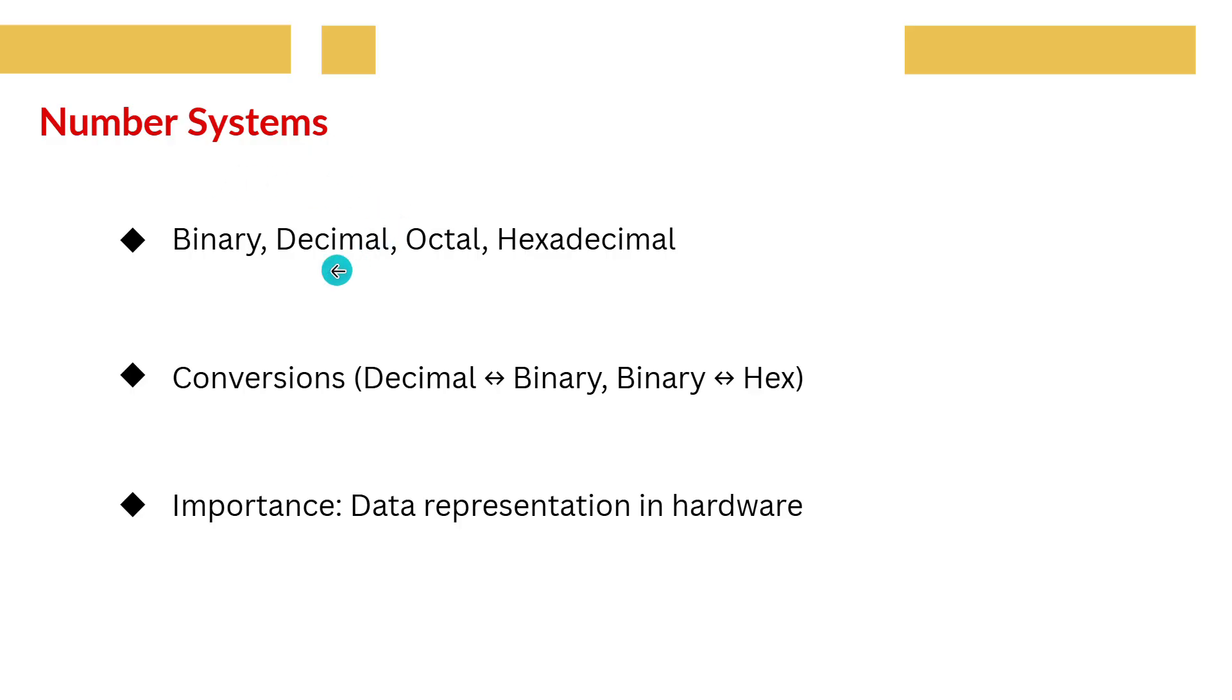Number Systems. Computers don't understand decimal numbers like us. They only understand binary, zeros and ones. Apart from binary, we also use octal and hexadecimal systems because they simplify representations. For example, one hexadecimal digit equals four binary digits.